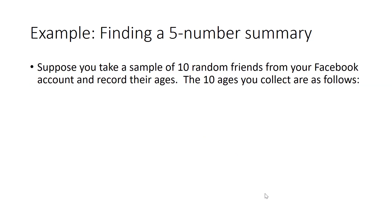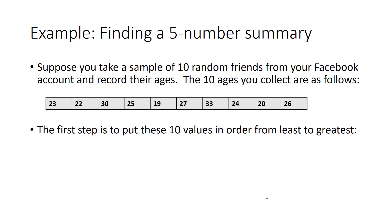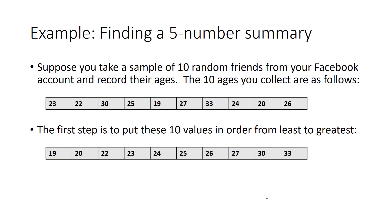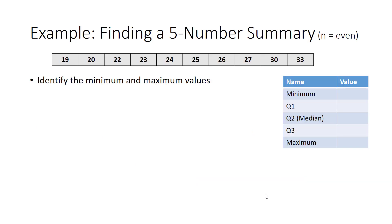Let's do an example. Suppose you take a sample of ten random friends from your Facebook account and record their ages. The first thing we need to do with this set of data is to put these values in order from least to greatest. Once we have organized the data, we can identify the minimum and maximum values with ease. The minimum value is 19 and the maximum value is 33.